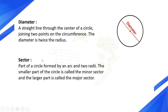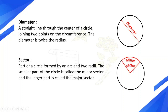Sector: part of a circle formed by an arc and two radii. The smaller part of the circle is called the minor sector and the larger part is called the major sector.